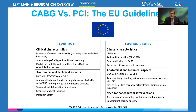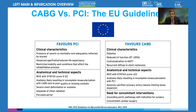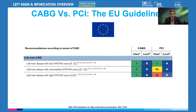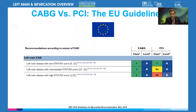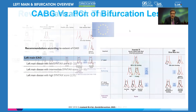What favors CABG is diabetes with diffuse disease, a low ejection fraction, contraindication to any antiplatelet therapy, previous stents with a lot of in-stent stenosis, and a higher Syntax score. Obviously, if you have a concomitant pathology such as a valvular or aortic aneurysm, that also favors CABG. The level of evidence for CABG in left main disease is class one regardless of the Syntax score. For PCI, a high Syntax score carries a class three recommendation.